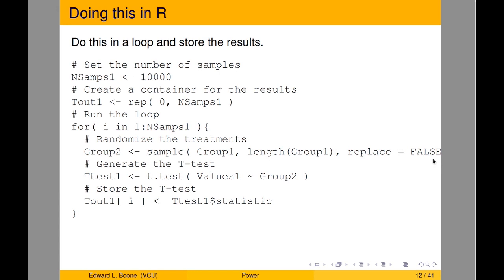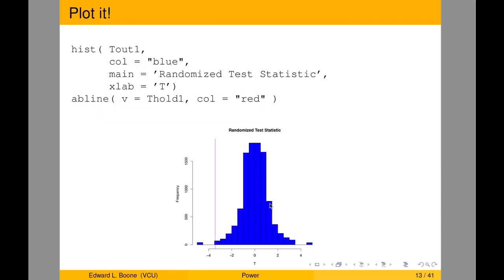Then I generate the t-test based on group2 and write it into variable t_test1. I store t_test1$statistic into slot i of my container t_out1. That's pretty straightforward — the loop fills the container with t-statistics from each randomization.